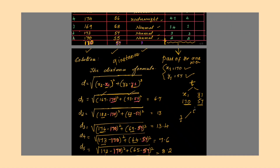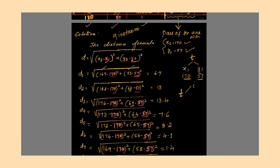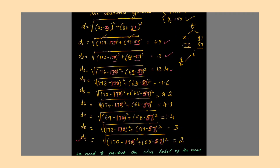Every time the training instance (x2, y2) will change, while (x1, y1) remains 170 and 57. For example, x2=167, y2=51 for the first training instance; 182 and 62 for the second; 176, 69 for the third; 173, 64 for the fourth — and so on. Once you substitute these values into the distance formula, you get distances: 6.7, 13, 13.4, 7.6, 8.2, 4.1, 1.4, 3, and 2.